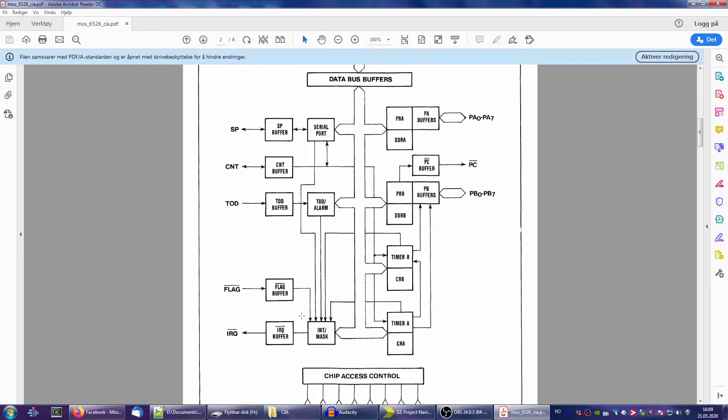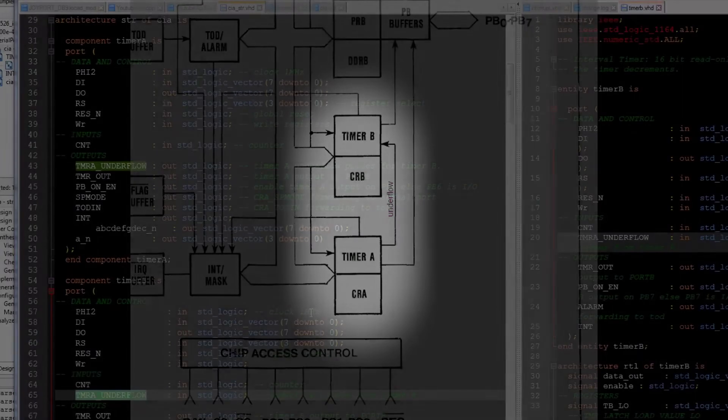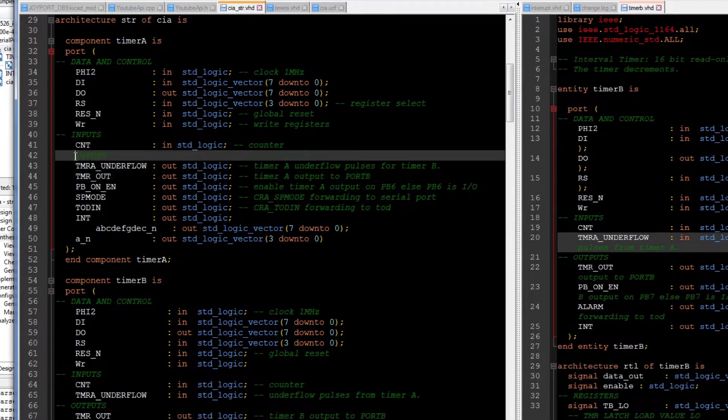Here you can see Timer A is connected to Timer B. The way this works is that you can make Timer B count every time Timer A underflows — that means it comes down to zero and then starts over. So you can cascade the timers in that way.